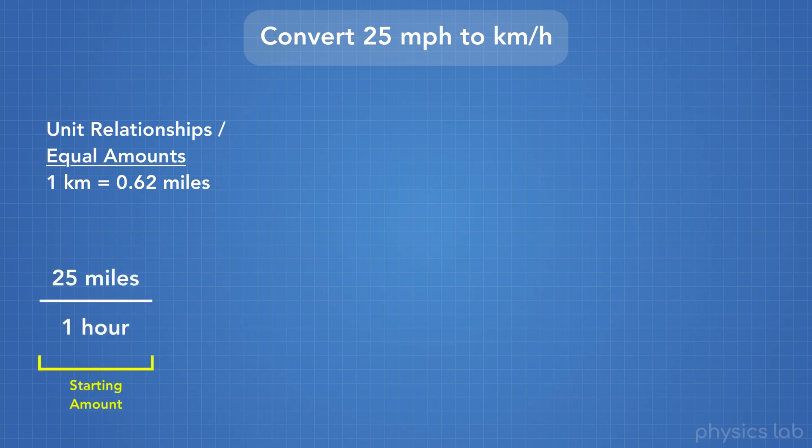Next, we write our starting amount, which is 25 miles per hour. Notice how miles per hour was written as MPH, but now we have 25 miles per one hour. Whenever we convert between units, we need to write them out completely as fractions.